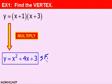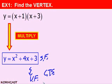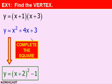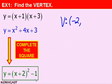This equation is now in standard form. To put it into vertex form, we must complete the square. The result of completing the square on y = x² + 4x + 3 is y = (x + 2)² − 1. If you need to review this, please watch the completing the square corncast. Now just by inspection, we can get the vertex. We have (x + 2)², so our h value is −2, and the −1 is our k value. So our vertex is (−2, −1).